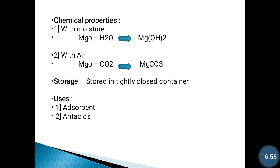So in non-systemic antacids we have three classes: aluminium containing antacids, calcium containing antacids, and magnesium containing antacids — which we have now finished. The remaining part is combination antacids, which we will see in the next lecture. Thank you. Happy learning.